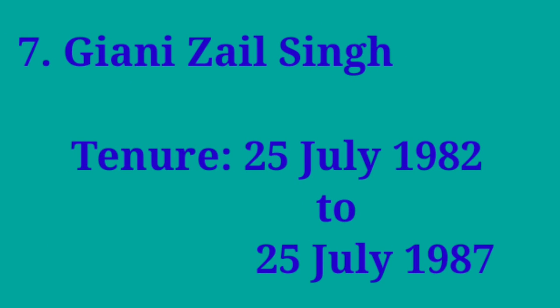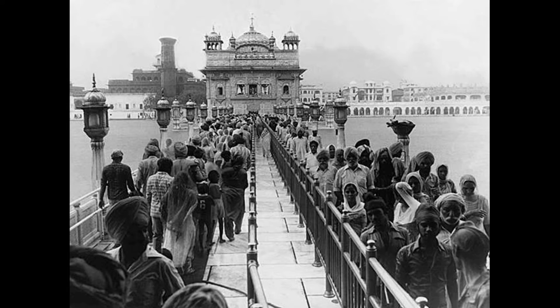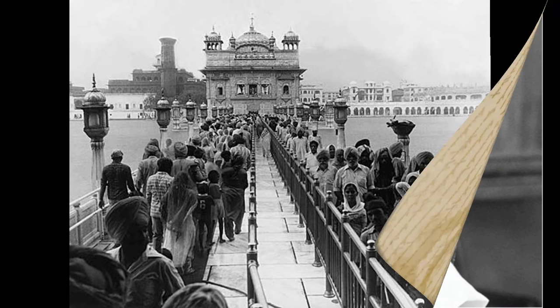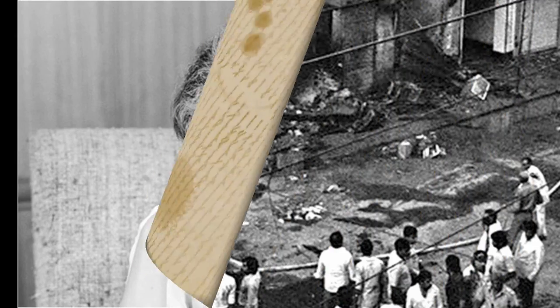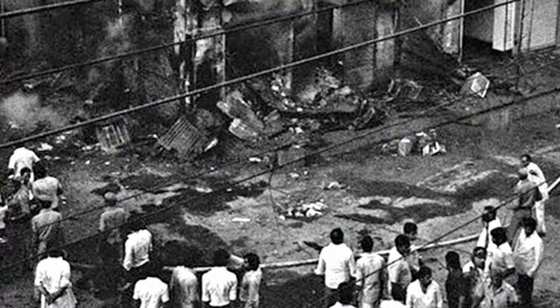Seventh, Giani Zail Singh, tenure: 25 July 1982 to 25 July 1987. Giani Zail Singh was the seventh President of India. During his presidency, many significant incidents took place, such as Operation Blue Star, the assassination of Indira Gandhi, and the 1984 anti-Sikh riots.